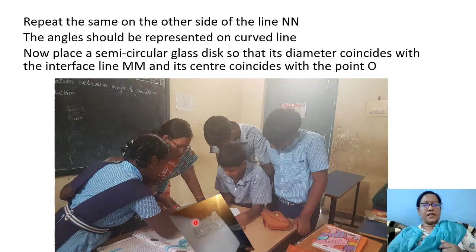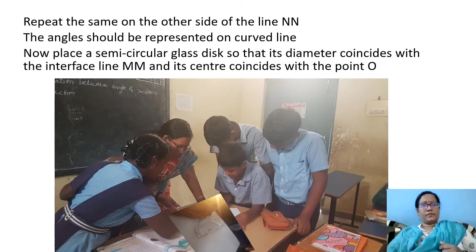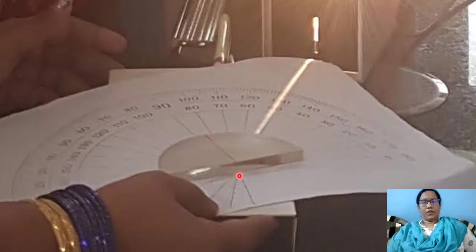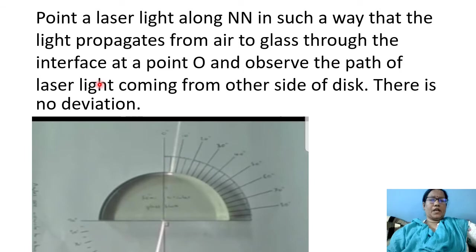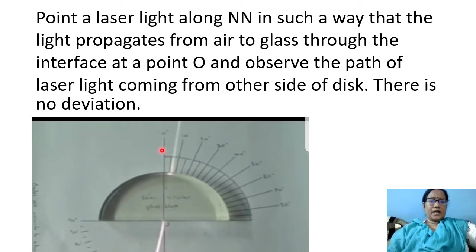Now place the semicircular glass slab so that its diameter coincides with the interface line MM and its center coincides with the point O. Notice carefully — this is O. Point a laser light along NN such that the light propagates from air to glass through the interface at point O, and observe the path of the laser light coming from the other side of the disc.